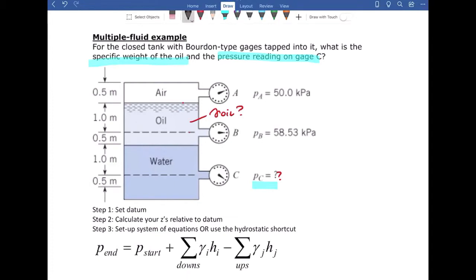The first thing we have to do is set our datum. So I'm going to set that at the bottom here. This is my datum. This means that everything up is positive and down is negative.